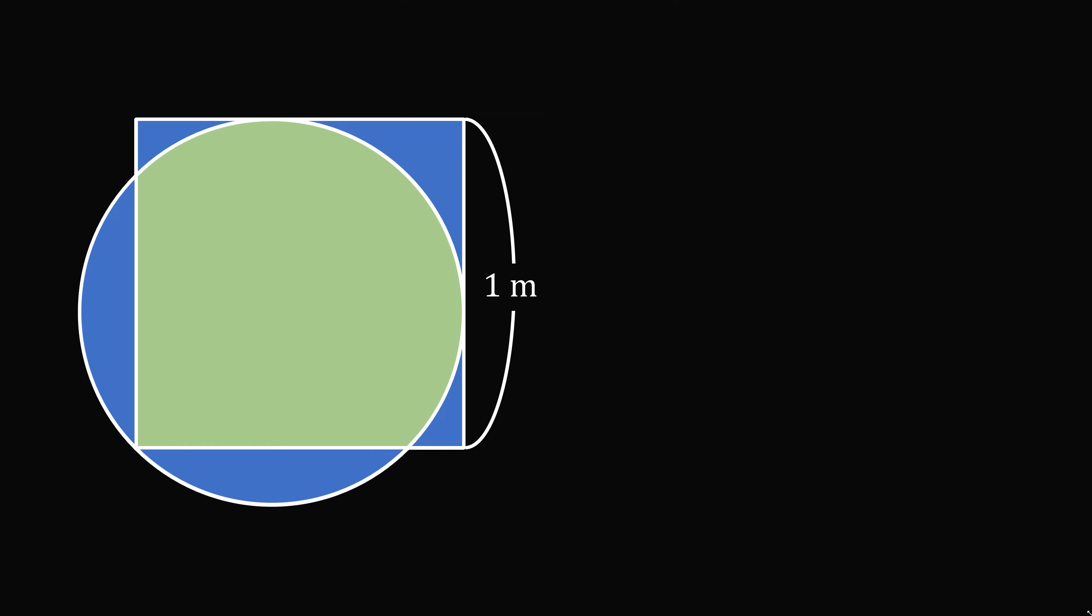Shade in the common area between the two shapes. Now we want the area that's shaded in blue. That will be equal to the area of the circle plus the area of the square minus two times the overlapping area. Furthermore,